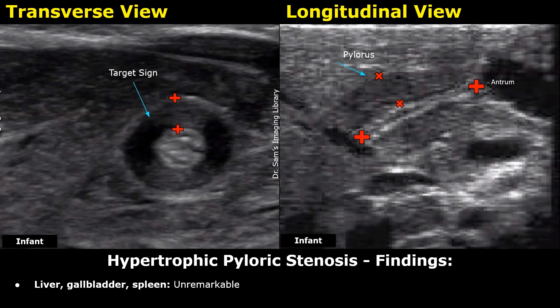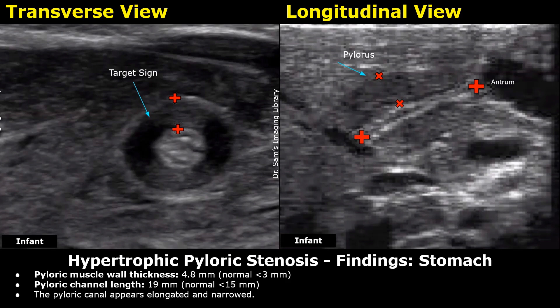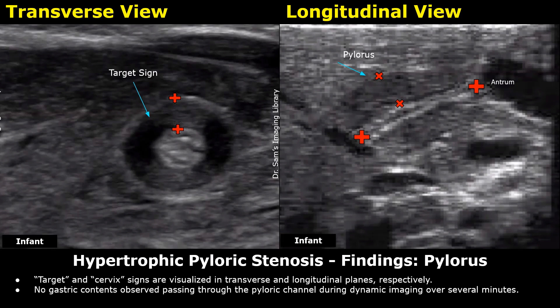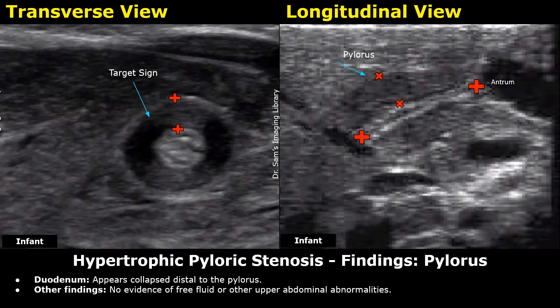Let's move on to the findings. In this case, the liver, gallbladder, and spleen appear unremarkable. The pyloric muscle wall thickness is increased, measuring 4.8 mm — normal thickness should be less than 3 mm. The pyloric channel length is also increased, measuring 19 mm — normal length is less than 15 mm. The pyloric canal appears elongated and narrowed. Target and cervix signs are visualized in transverse and longitudinal planes, respectively. No gastric contents observed passing through the pyloric channel during dynamic imaging over several minutes. The duodenum appears collapsed distal to the pylorus. No evidence of free fluid or other upper abdominal abnormalities.